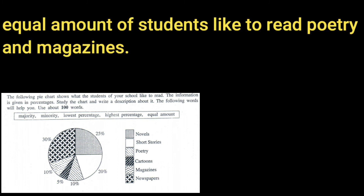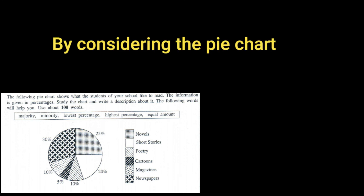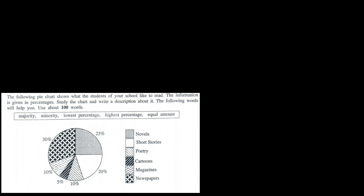An equal amount of students like to read poetry and magazines — that percentage is 10 each. By considering the pie chart, we can say the majority of students read newspapers, and the minority of students read cartoons.